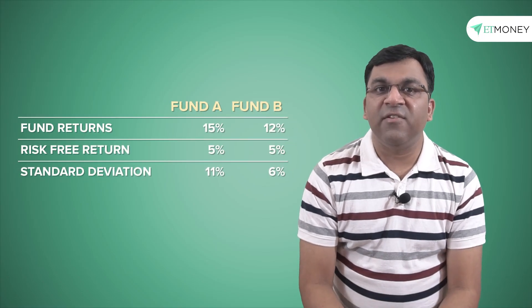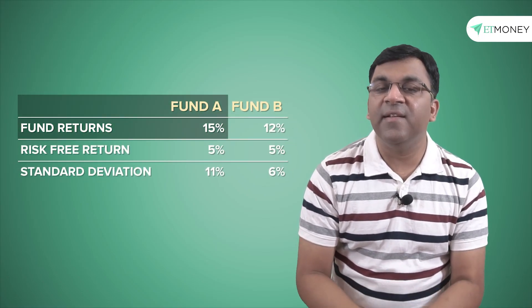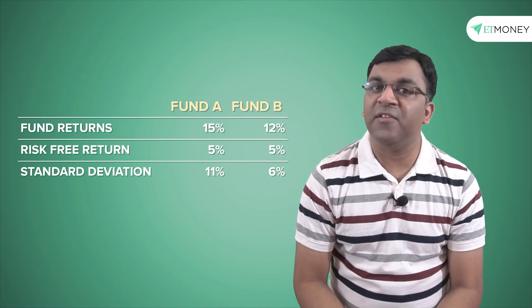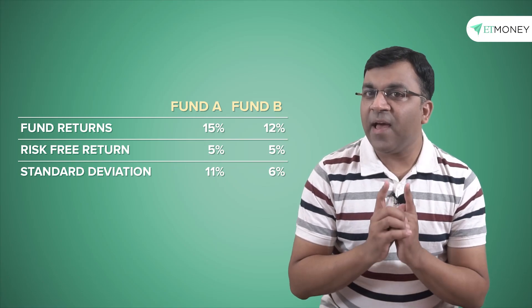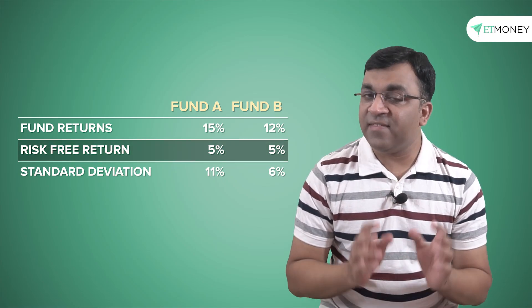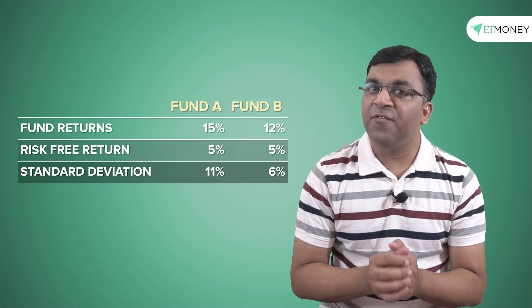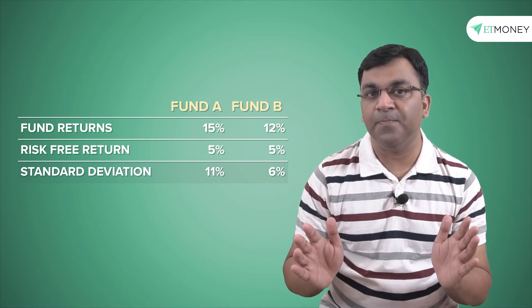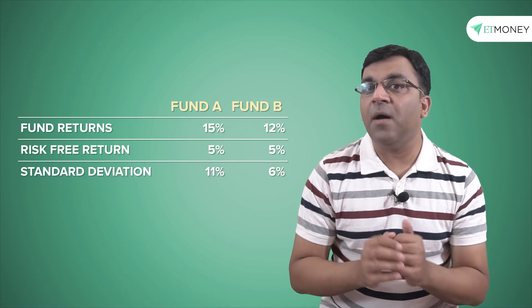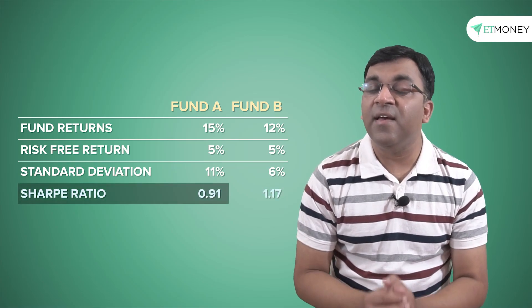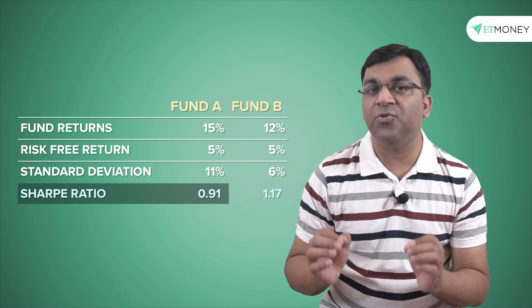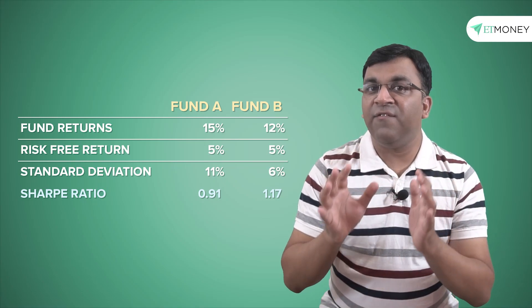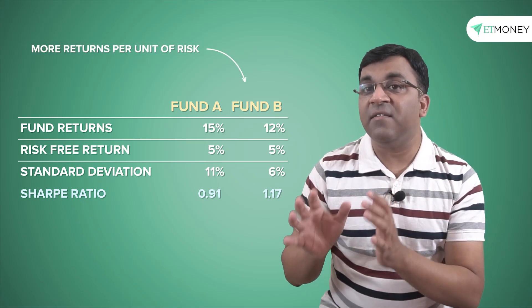Say fund A generates a return of 15% while fund B delivers a 12% return. Now on paper, fund manager A has performed better than fund manager B. Next, let's apply a risk-free rate of 5% and the standard deviation that I calculated separately. For fund A, the standard deviation came to 11% while it was 6% in case of fund B. Applying the formula, the Sharpe ratio of fund A comes to 0.91, while fund B's Sharpe ratio is 1.17, which means that fund A gave more returns while fund B delivered a better risk-adjusted return.